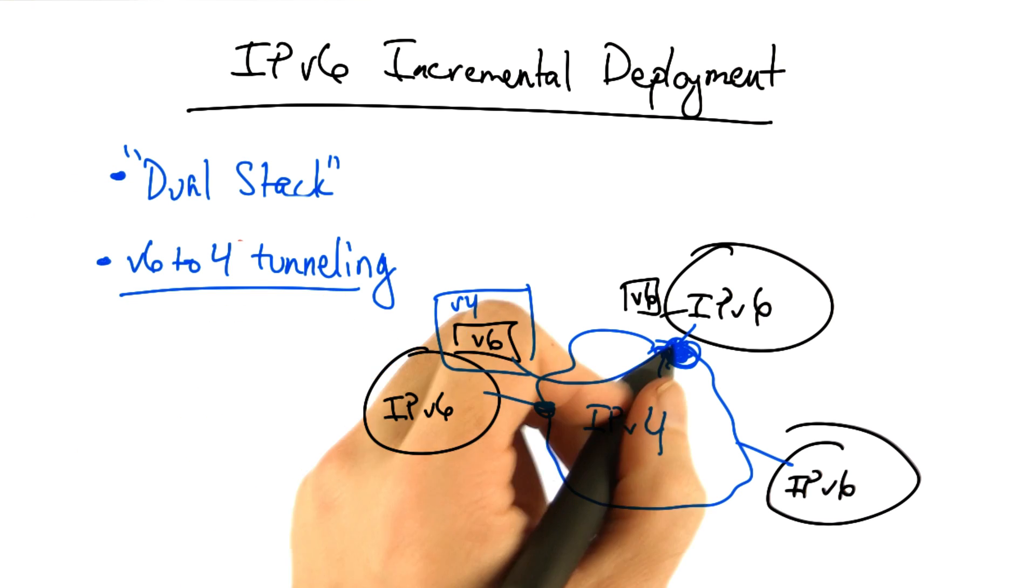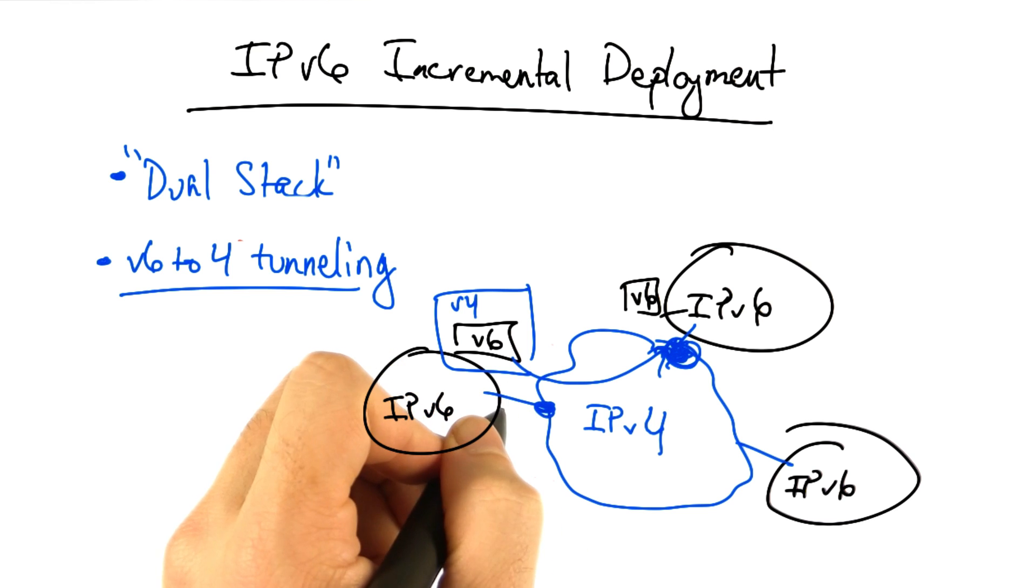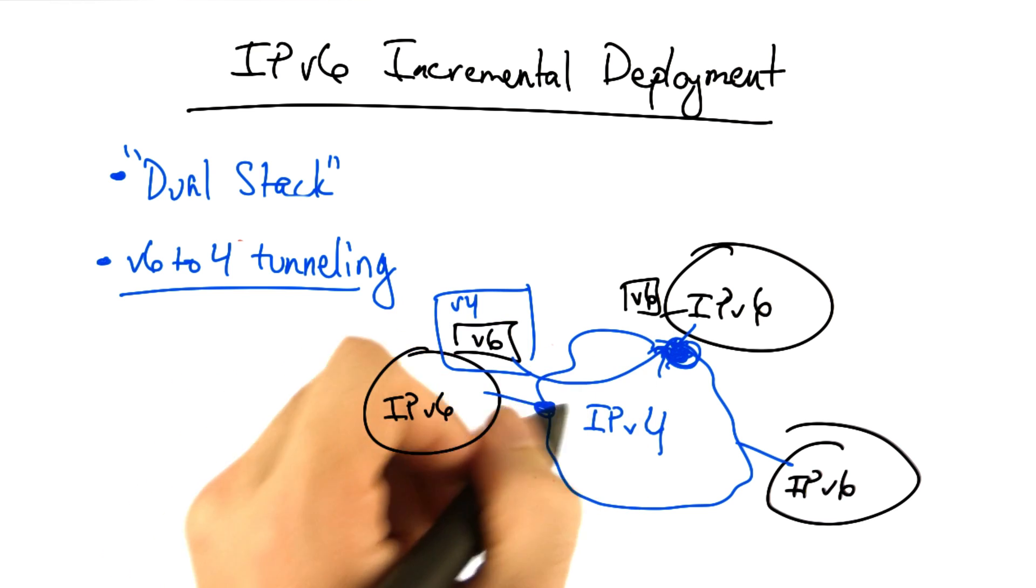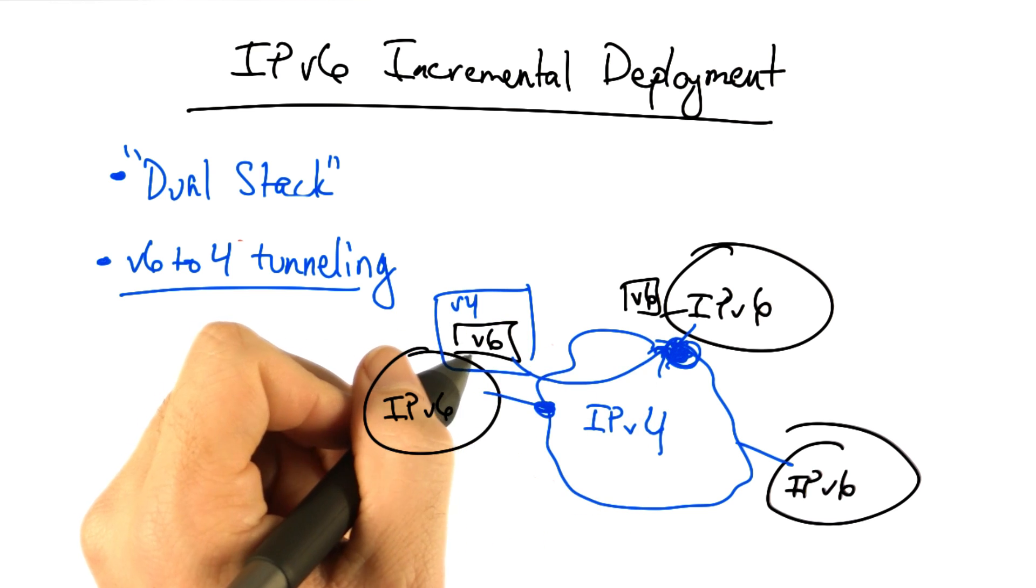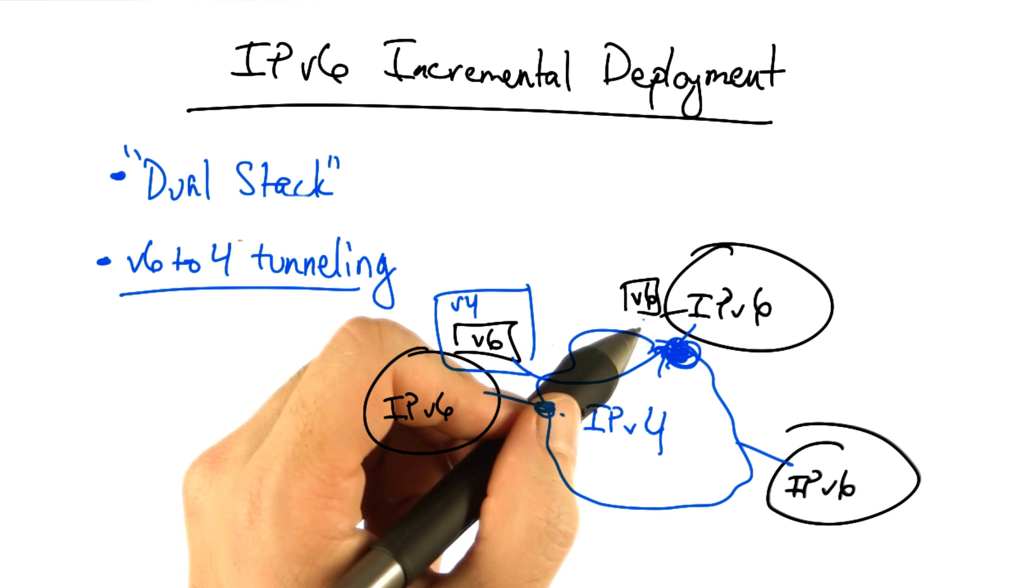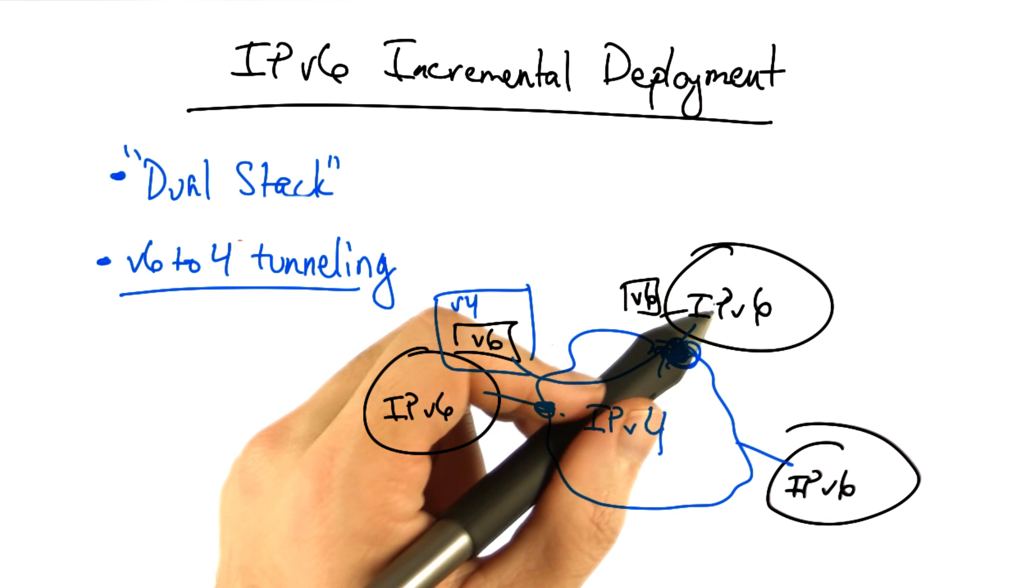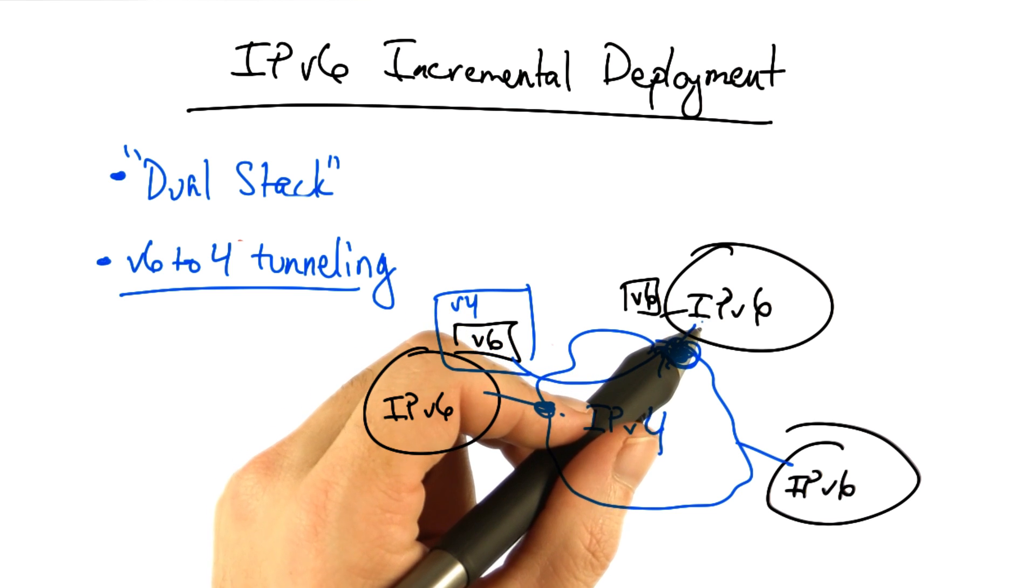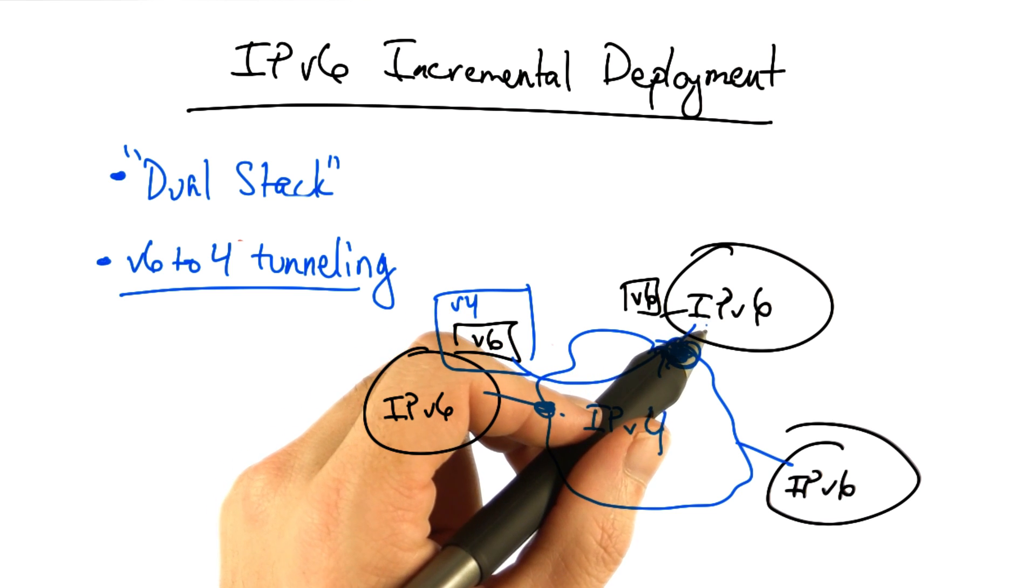This, of course, requires the gateways at the boundaries between the v4 and v6 networks to perform encapsulation of the packet as it enters the v4 only part of the network, and decapsulation as the packet enters the v6 island where the destination host resides.